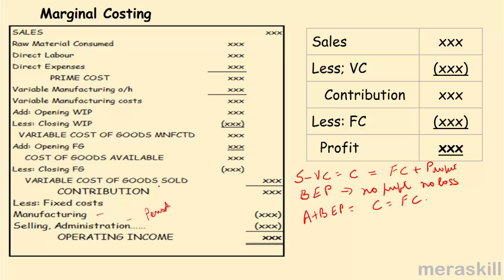To summarize: inventories under marginal costing are valued at variable cost only. They do not include the fixed element of the manufacturing cost.